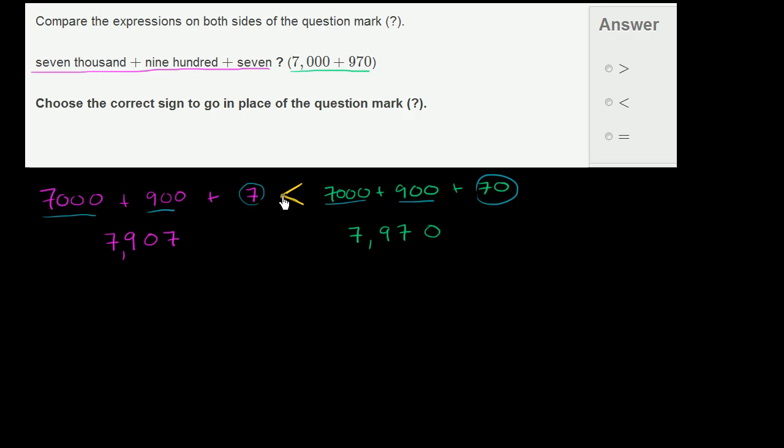I always remember the less than symbol because it points to the smaller number. Or either of these symbols point to the smaller number. So this right over here would mean greater than. You have the larger number on the left. This is less than. You have the smaller number on the left. So we would go with less than. This is less than that.